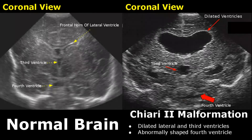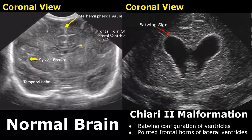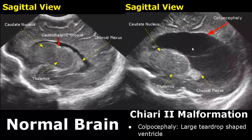This is a coronal image showing dilated lateral and third ventricles with an abnormally shaped fourth ventricle — you can see the difference in shape and location of the fourth ventricle. Batwing configuration of lateral ventricles is another feature, due to pointed frontal horns.